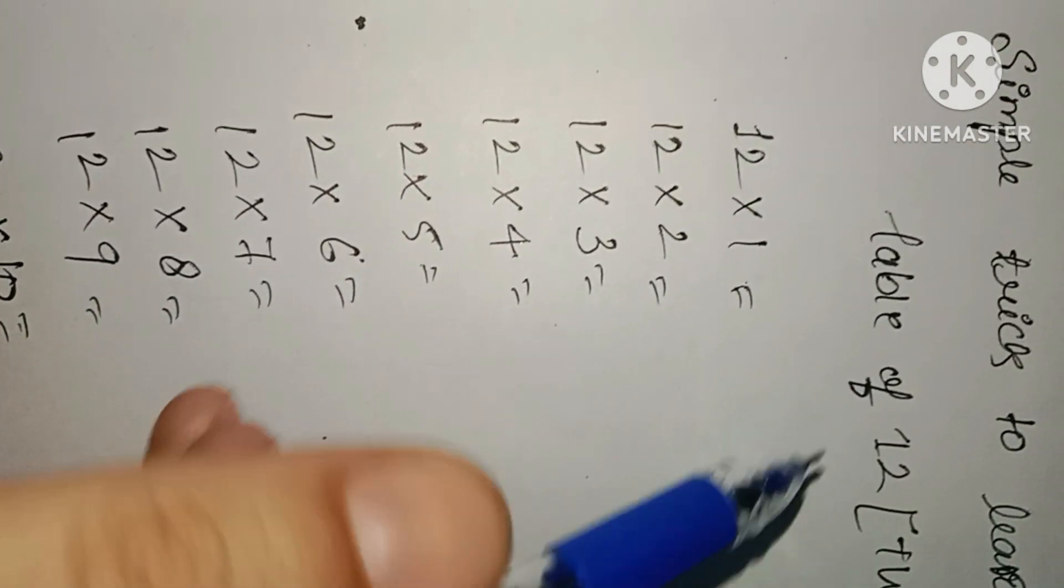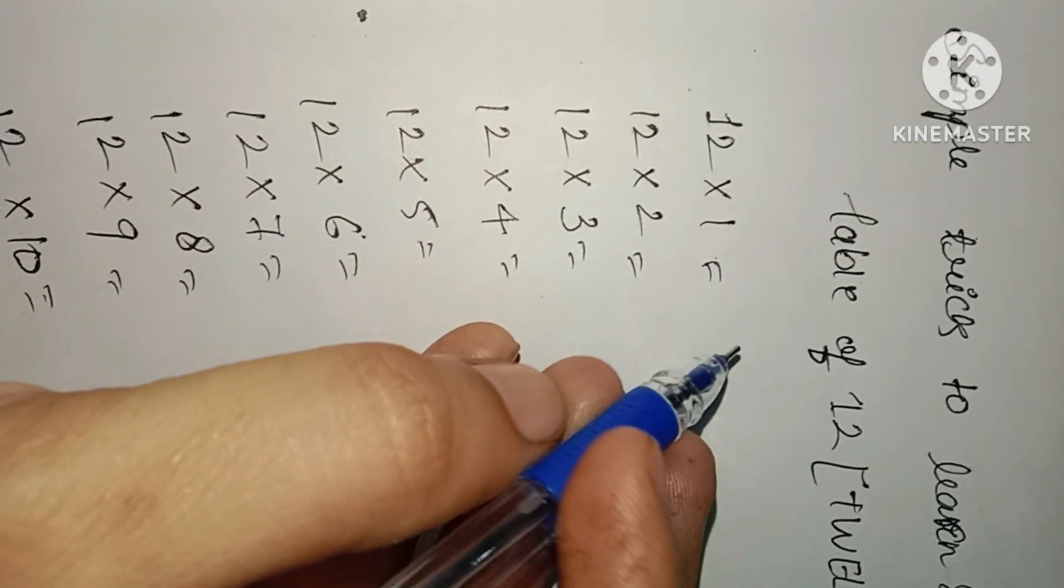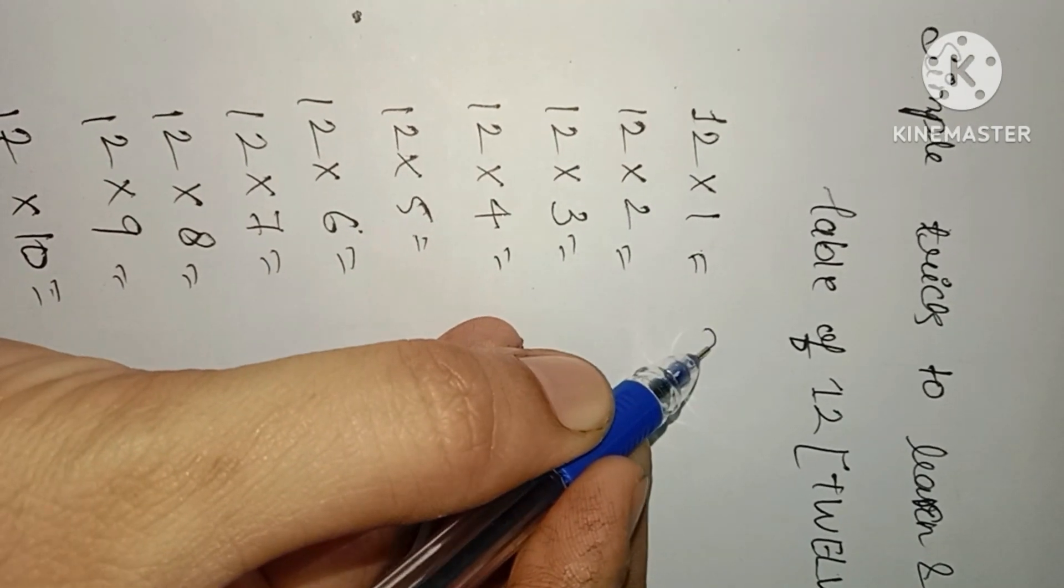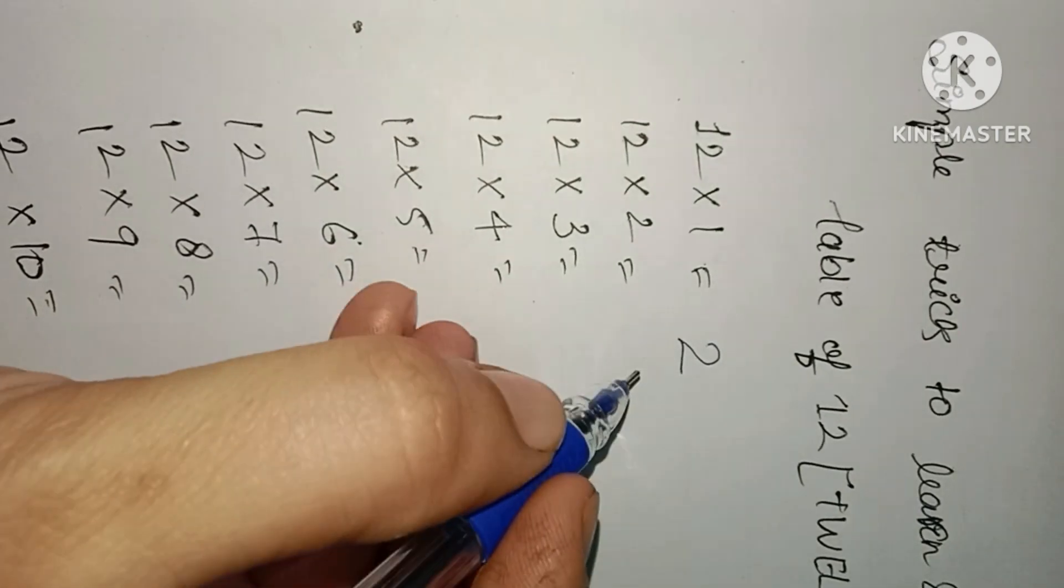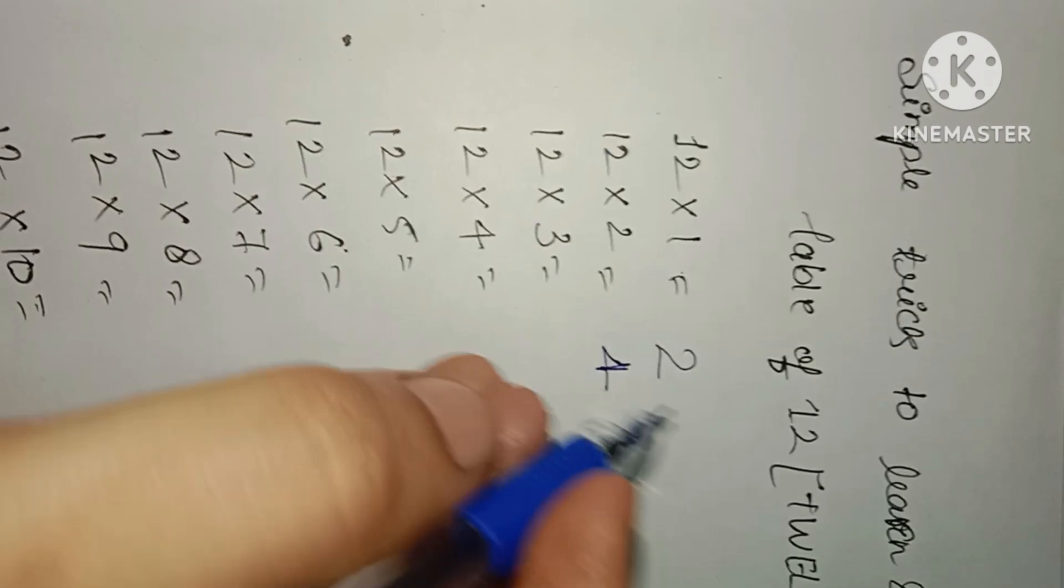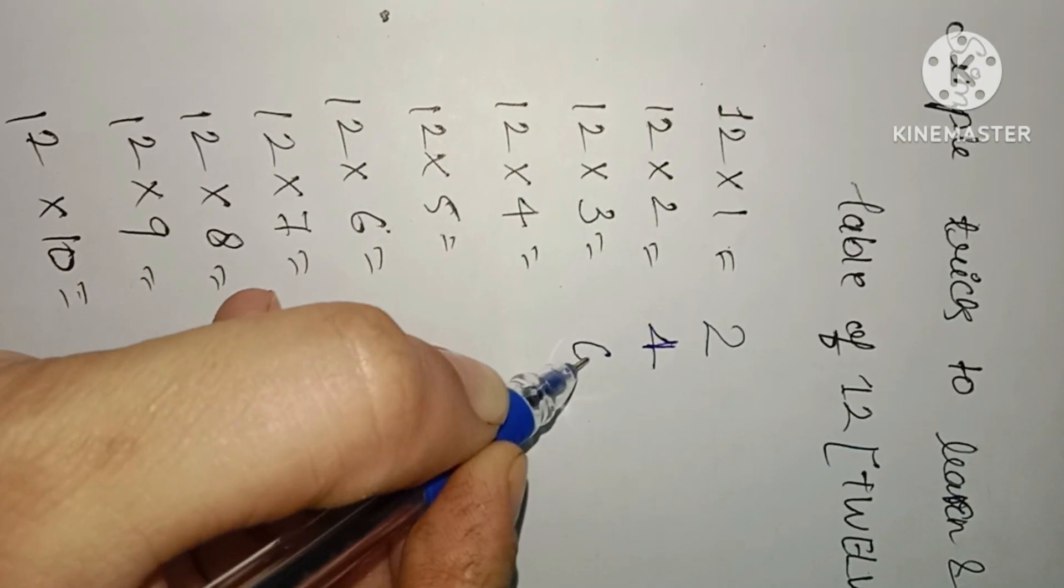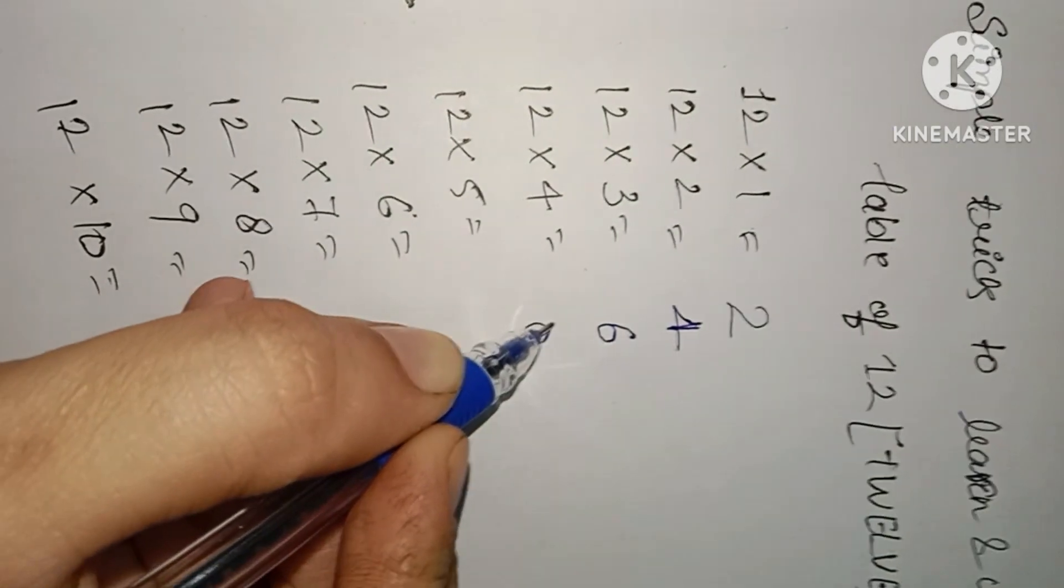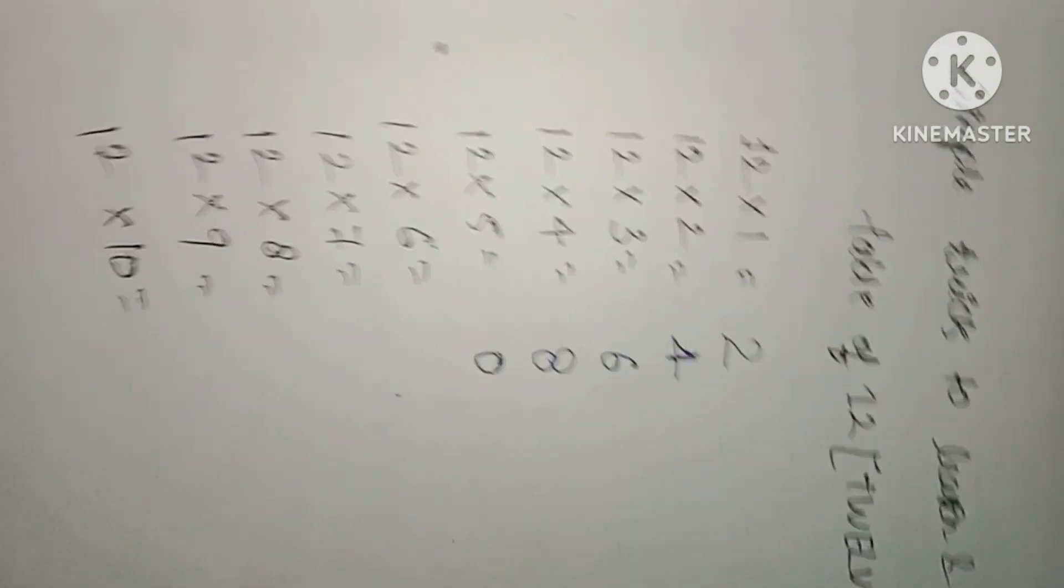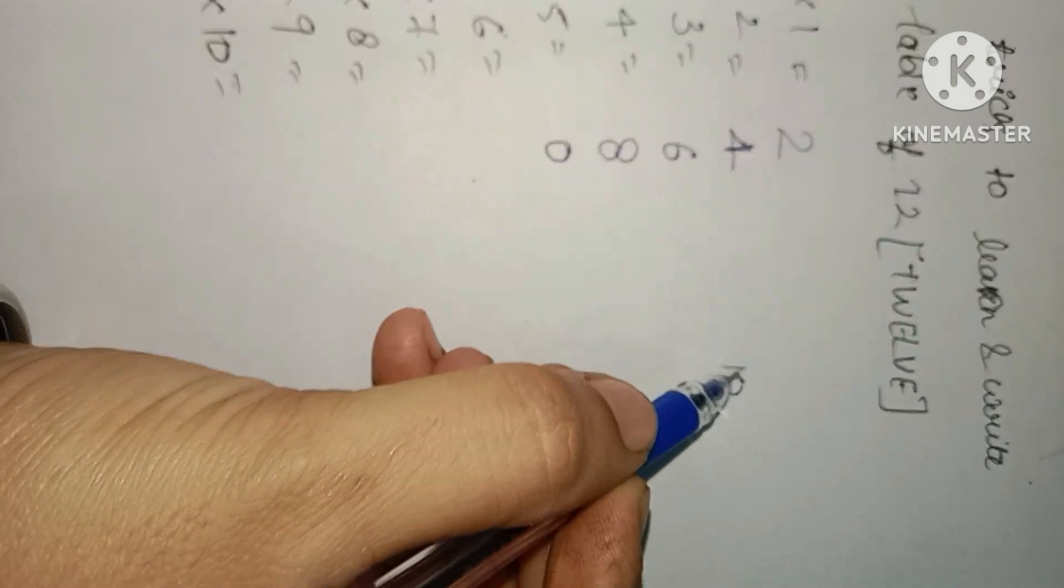Let's get started. Now what will we write? 12 times 1 is 12. Now how will we write it? First you will remember the table of 2. Two ones are 2, everyone knows. Two twos are 4, two threes are 6, two fours are 8, two fives are 10. Here we will put zero of 10, we will remove the 1.